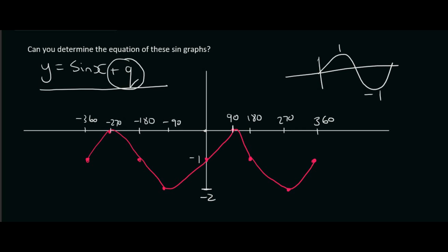Now the highest value on this graph is 0. I'm talking about the y value. And the lowest value is minus 2. On a normal sin graph it's 1 and minus 1. So what have they done to these two numbers to get them to become 0 and minus 2?